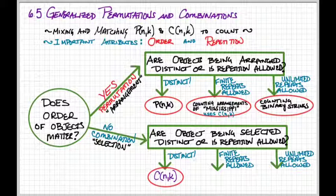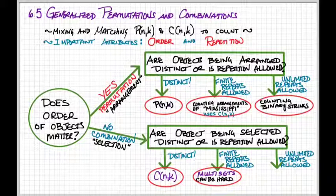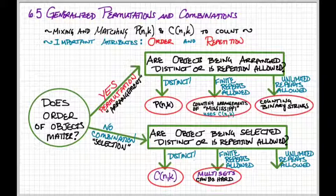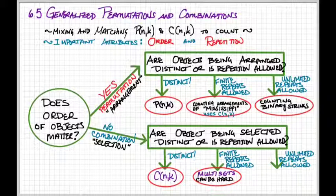If finite repeats are allowed, these things are called multisets. So we look at the multiplicity of the object that's being repeated. And I'll be honest with you, these problems can be hard, and you sort of have to approach them as a unique question each time.